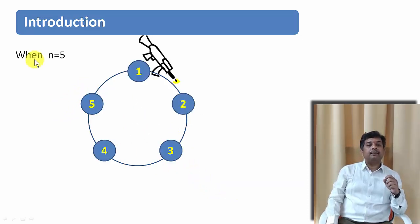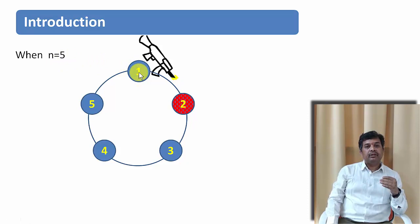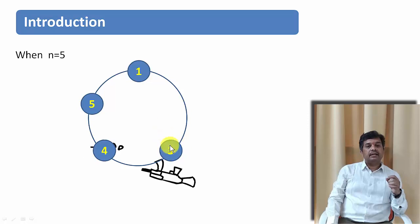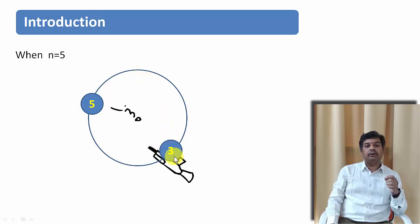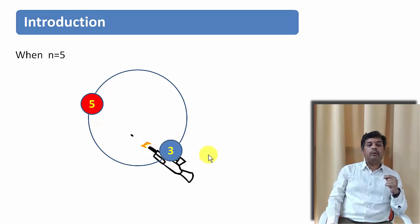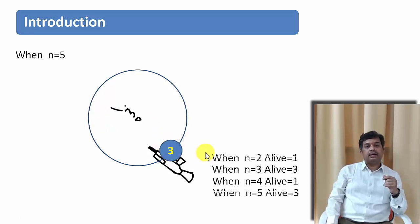Let us see one more example when N equals 5. Person 1 has the gun and kills person 2. He passes the gun to person 3. Person 3 kills person 4, and passes the gun to person 5. Person 5 kills person 1. After killing person 1, he passes the gun to person 3. Person 3 then kills person 5, and person 3 gets freedom. So when N equals 5, person 3 is alive.